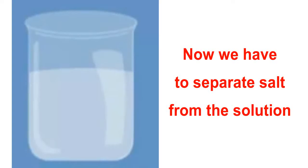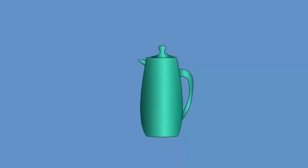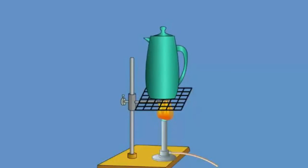Pour the solution of water and common salt into a kettle. Cover the kettle with a lid. Heat the kettle for some time on the Bunsen burner. You will observe steam coming out from the spout of the kettle.